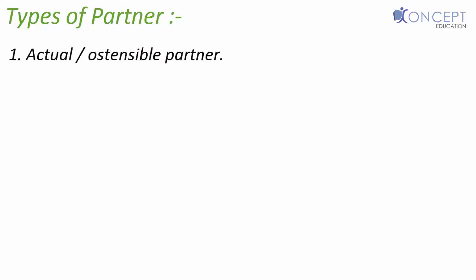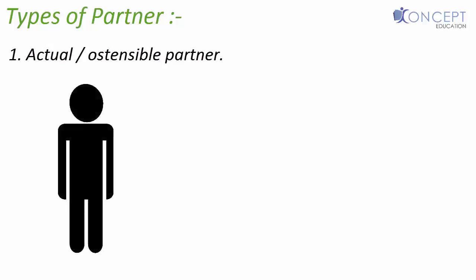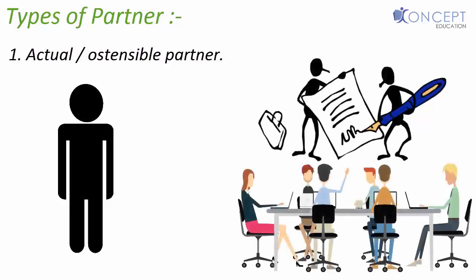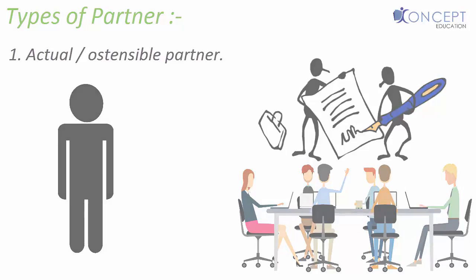The first is an actual partner or ostensible partner. He is a person who has become the partner by agreement and is actively involved in the partnership business. He is the agent and also the principal like all other partners. He also has the binding power for any act done by him.